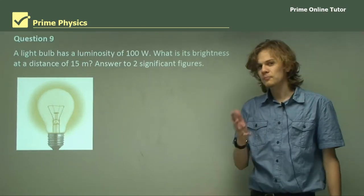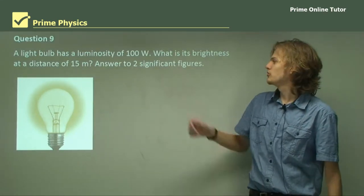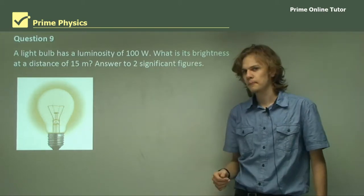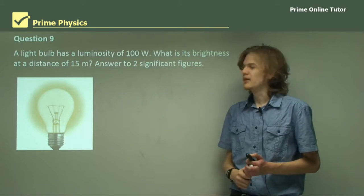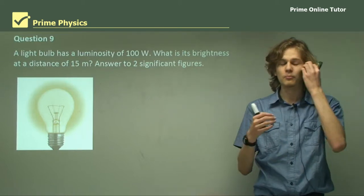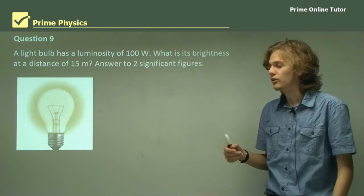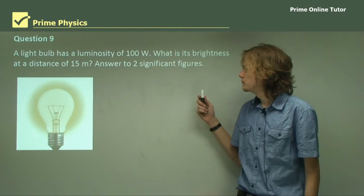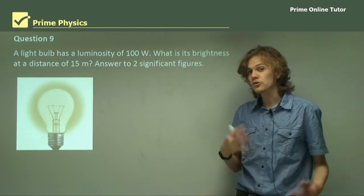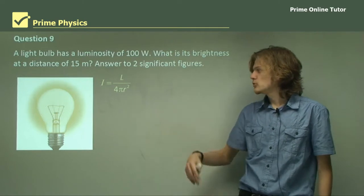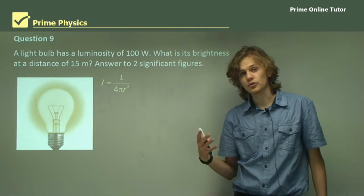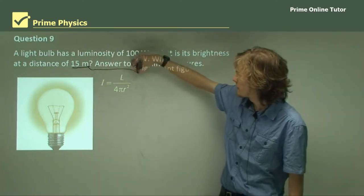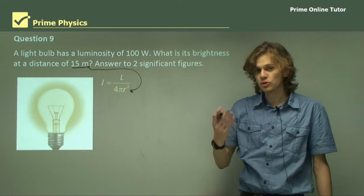Question 9. A light bulb, finally something back in real life, has a luminosity of 100 watts. What is its brightness at a distance of 15 meters? We're still using the same concepts as for stars—brightness and luminosity, or intensity and luminosity. So we can use the same equations. Intensity equals luminosity over 4πr². Our distance r is 15 meters, and we know its luminosity is 100 watts.